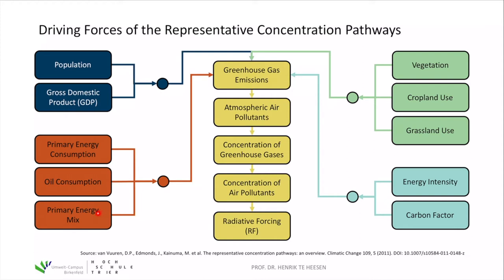A key question is how the primary energy mix will look: will we rely on coal and natural gas power plants, or will there be a transformation to wind turbines, photovoltaics, concentrated solar power, hydropower, and similar technologies? The third group is change of land use — how vegetation will change within the next decades, what happens with cropland use mainly due to food production, and what happens with grassland. This all provides an outlook for greenhouse gas emissions.